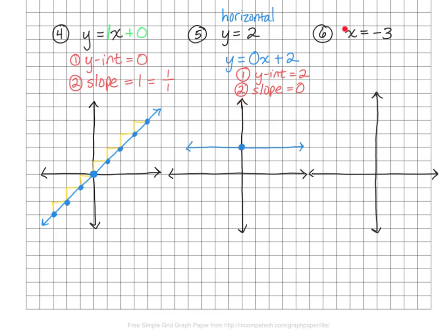And number 6: x equals negative 3. This time we're going to have a vertical line crossing the x-axis at negative 3. Since there's no y in the equation at all, the x-intercept — not the y-intercept — is going to be negative 3. Whenever the x-intercept equals something, it's going to be a vertical, or undefined, slope. If you need to re-watch this video, please do so as many times as you need. Thank you for watching.